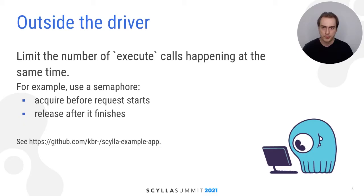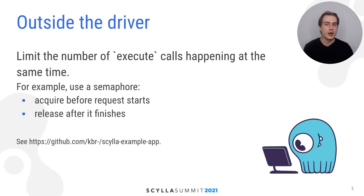How? The most important mechanism is a limit in your client code, so before even entering the driver. How do you achieve that? For example, you can use a semaphore which you acquire for the duration of the request. You probably want to combine this with some kind of backpressure mechanism for the users of the application. The details depend on your use case. I made an example app that demonstrates this technique, so we can look it up later.